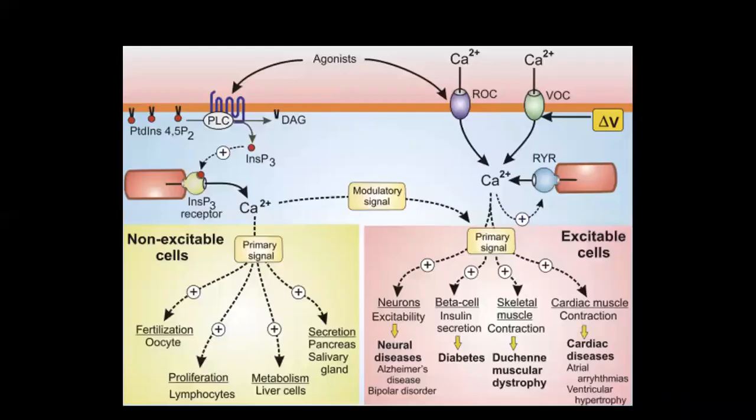So the next thing is, if you see now how the calcium signaling works. It works here, we can see the agonist binds to the receptor, and then phospholipase C gets activated.